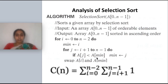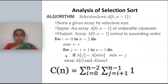You compare the value in the array indexed by minimum with the j-th element. If the j-th element is lesser than the minimum element, you change the minimum index. Then you make a swap between the i-th element and the minimum element. This is the algorithm — we are not concentrating on detail, we are going to analyze it.